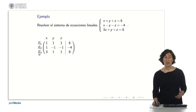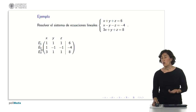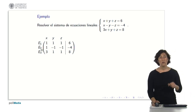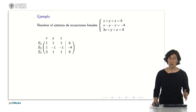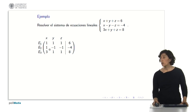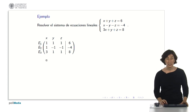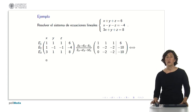What operations can we perform? Those that are allowed: to an equation I subtract another one multiplied by a number, or I divide it by a number, as long as I neither multiply nor divide by zero. So in this case, if equation 2 subtracts equation 1, I will have a zero here, which is what we are looking for. And if equation 3 subtracts equation 1 multiplied by 3, I will have a zero here, which is the other zero we are initially looking for.